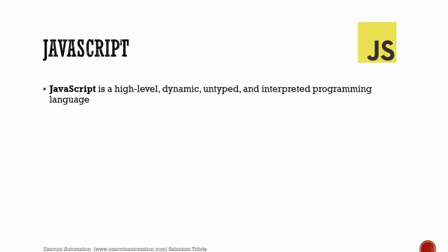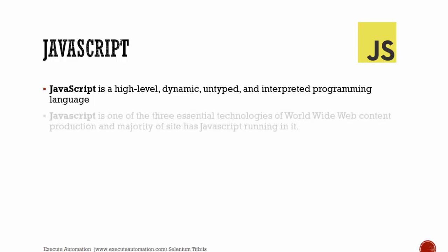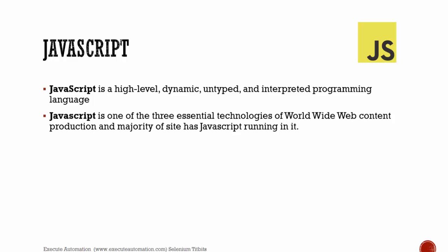JavaScript is a high-level, dynamic, untyped, and interpreted programming language. It is one of the three essential technologies of worldwide web content production and the majority of sites have JavaScript running in them. The three essential technologies are HTML, CSS, and JavaScript. JavaScript runs without any special plugin in the browser.